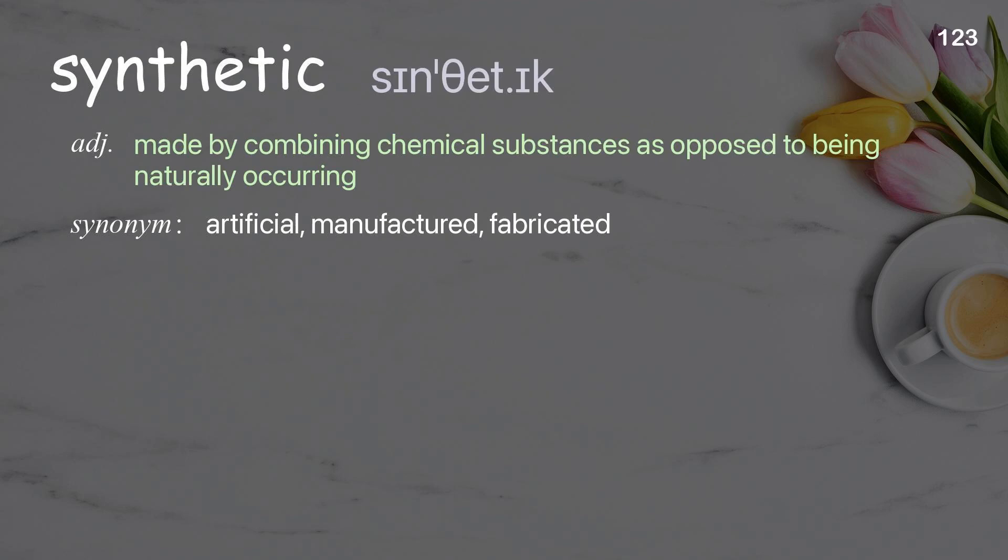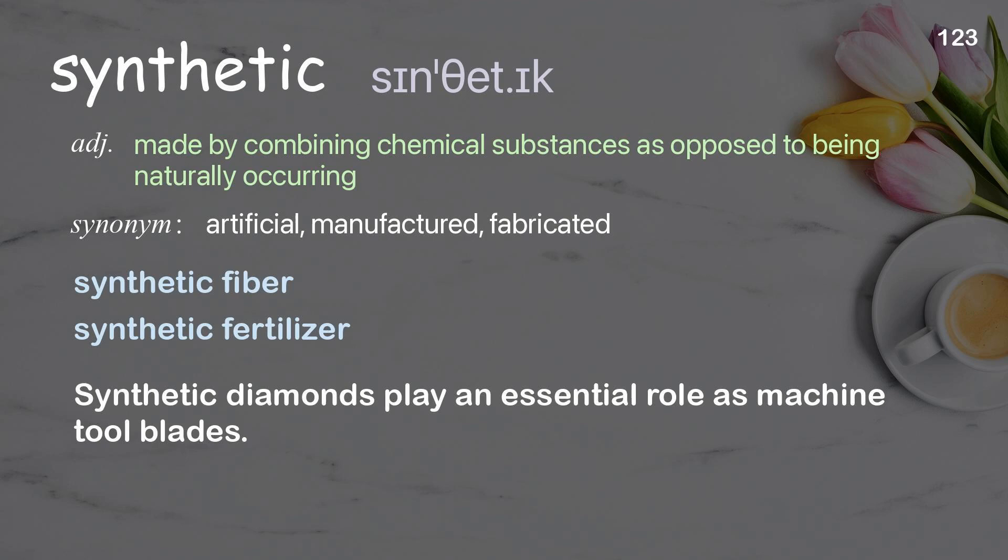Synthetic: made by combining chemical substances, as opposed to being naturally occurring. Examples: synthetic fiber, synthetic fertilizer. Synthetic diamonds play an essential role as machine tool blades.